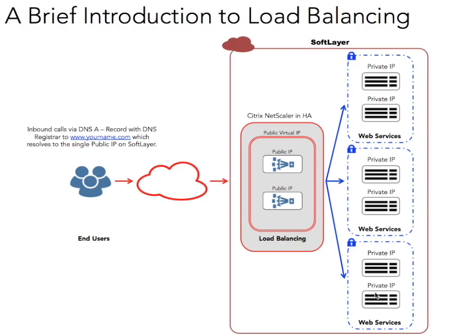Why have only one Netscaler? You could be a very popular company or a very large company with multiple different applications you want to provide on the web. The Citrix Netscaler can handle that — it will sit in front of all of your web services, load balancing across and within those services. You're not fixed with just one web service; you can have many, with multiple VIPs and multiple DNS records. So you might have yourname1.com, yourname2.com, yourname3.com — all coming to your Netscaler, which load balances within each web service.